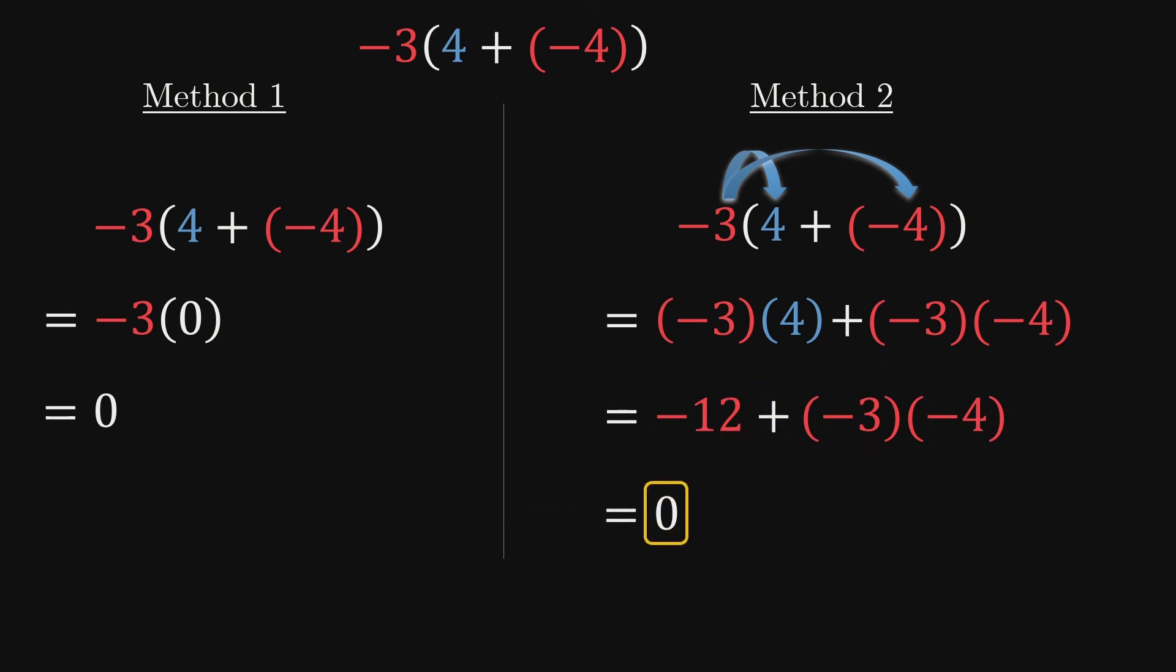Well, the only number we can add to negative 12 to get 0 is 12. More specifically, positive 12. So, our negative 3 times negative 4 can only be positive 12.